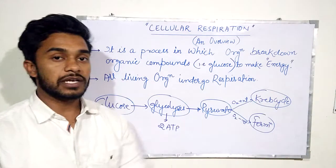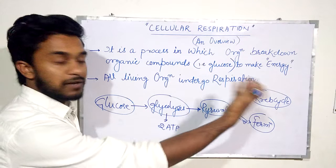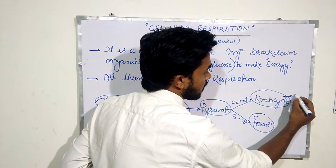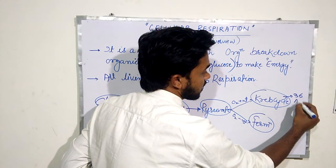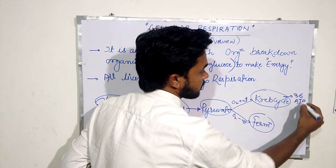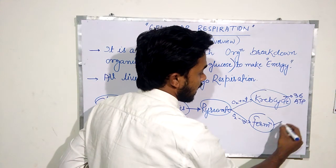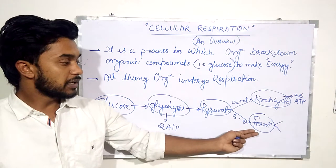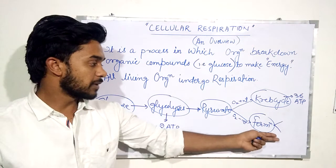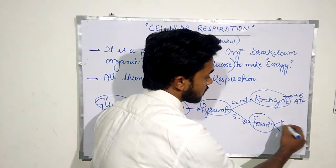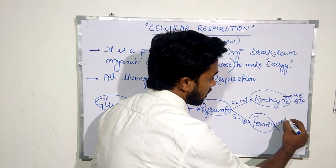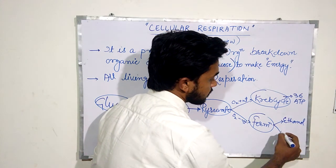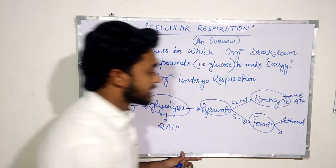During the Krebs cycle, after the complete process, it produces a net amount of 36 ATP. In the absence of oxygen, fermentation occurs, and there are different kinds of fermentation — they may produce ethanol or they may produce lactic acid.